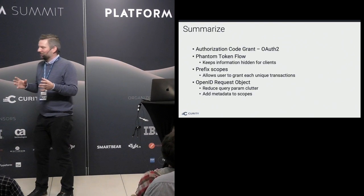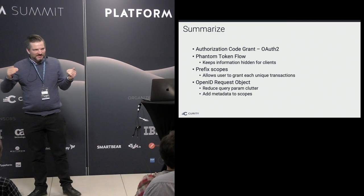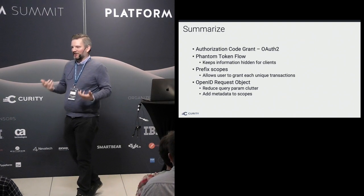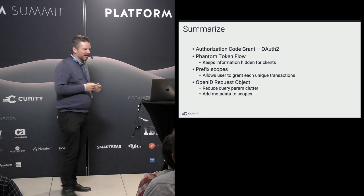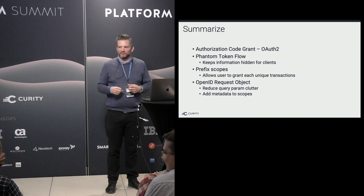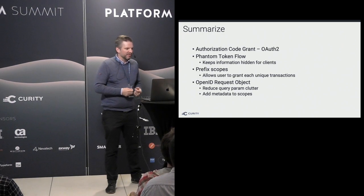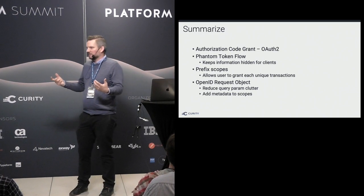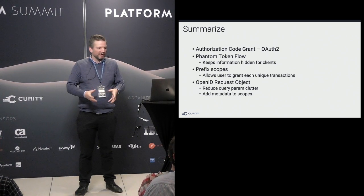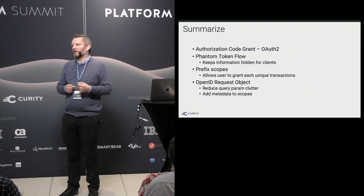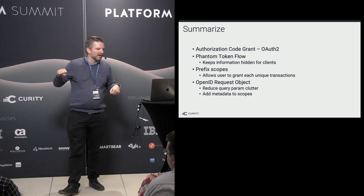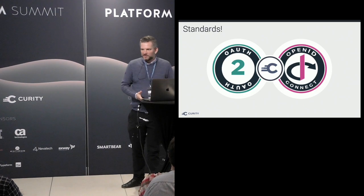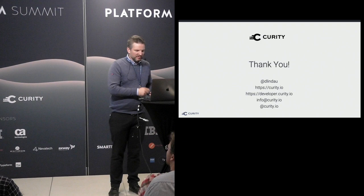To summarize: I'm basing this solution on the authorization code grant flow and using the phantom token flow, which is an implementation of different standards. It's very good because it keeps information out of clients, and gives trusted information to the APIs. We can use prefix scopes to attach transaction IDs onto scopes and allow users to grant consent for each unique transaction. We can use the OpenID request object — the server can trust the data because it's signed by the client — and we can add metadata into the scopes with the transaction information. We did all this based on standards.